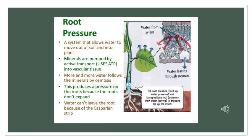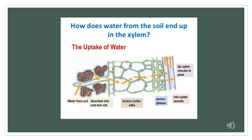Root pressure is a system that allows water to move out of the soil and into the plant. Minerals are pumped by active transport using ATP into vascular tissue. Then more and more water follows the minerals by the process of osmosis and this produces a pressure on the roots because the roots don't expand and this exerts pressure on the water to move forward. Look at the diagram to understand how water reaches the xylem vessels because of the root pressure. Water is absorbed into the root hair cell from the soil and then across cortex cells and phloem it reaches into xylem vessels and from there on it moves upwards.